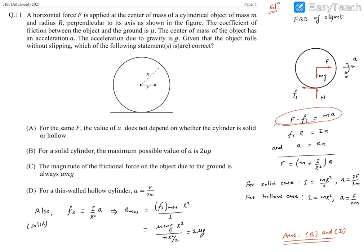Newton's laws of motion for translatory motion say the total force in the forward direction must equal mass into acceleration. So F minus f_static equals m times a.